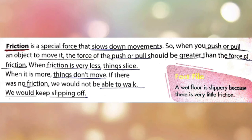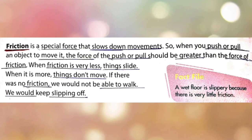Now, friction. Friction is a special force that slows down movement. When you push or pull an object to move it, the force of the push or pull should be greater than the force of friction. Jab hum force lagate hain to jo hamara force hota hai wo greater ho jaata hai aur jo friction hota hai wo less ho jaata hai, isliye cheezein aasaani se slide karti hain. If there was no friction, we would not be able to walk — we would keep slipping.